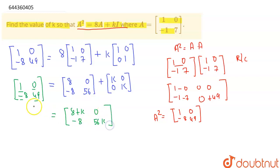Correct up to now, and this one would be the same as it is, which is [1, 0, -8, 49]. So if I compare these two matrices, I will get 1 = 8+k.